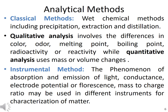For qualitative analysis, differences in color, odor, melting point, boiling point, and radioactivity are used. After identifying a compound in a given sample, quantitative analysis is performed to calculate the actual concentration of the targeted analyte. Instrumental methods include different phenomena such as absorption and emission of light, conductance, electrode potential, fluorescence, and mass-to-charge ratio — these are the bases of different instruments used to characterize a given sample.